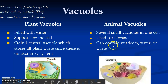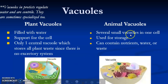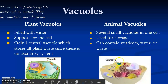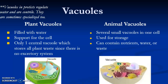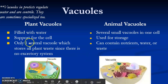Plant vacuoles are bigger — there is only one, and as you can see it is very large and filled with water. It stores plant waste because plants don't have an excretory system like we do. Animal cells have several small vacuoles. Each one contains nutrients, water, or waste, and is used for storage.